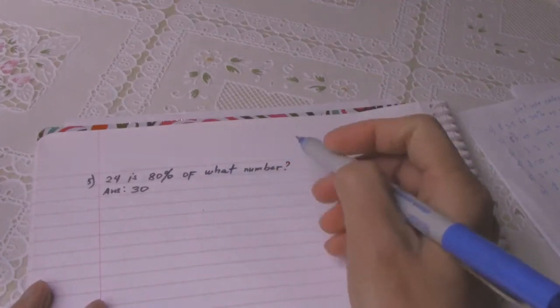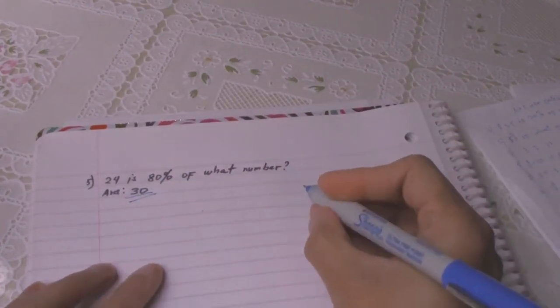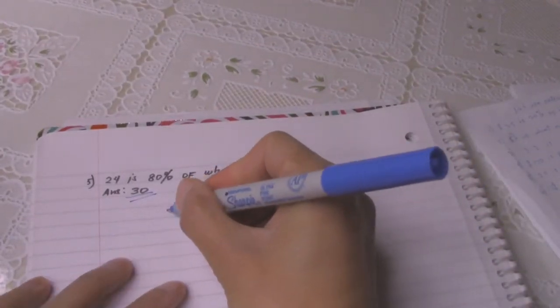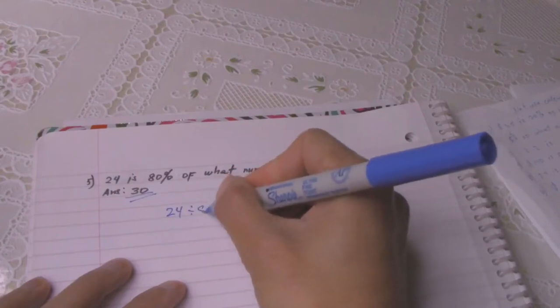Number 5: 24 is 80 percent of what number? The answer is 30. So how do you get that? 24 divided by 0.8 equals 30.